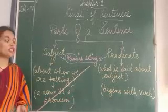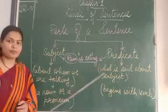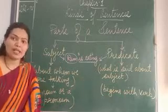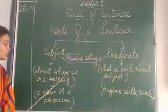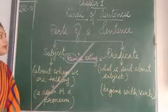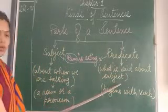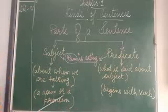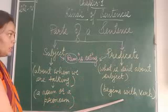I hope you have understood what is a subject and a predicate. Now let us revise once again. Subject: about whom they are talking. Predicate: what is said about the subject. Subject is always a noun or a pronoun and predicate begins with a verb.